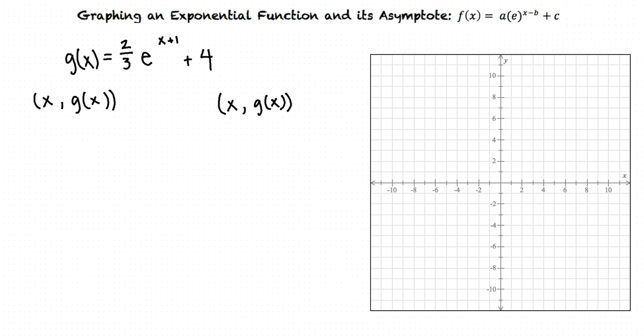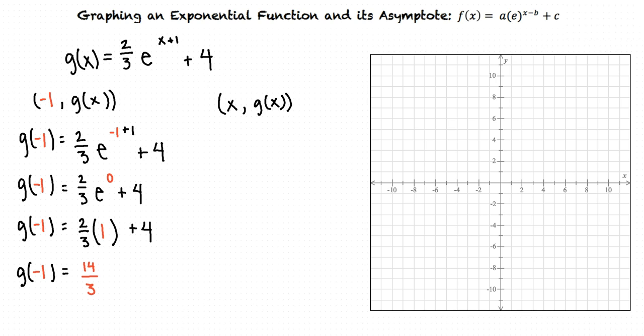We note that if the exponent of e is zero, this will give us a convenient expression to calculate g(x). To make the exponent zero we can set x equal to negative one, so we'll first evaluate g(x) for x equals negative one. After simplifying, we see that when x equals negative one, g(x) equals fourteen-thirds. This tells us that the point (-1, 14/3) is a point on the graph.